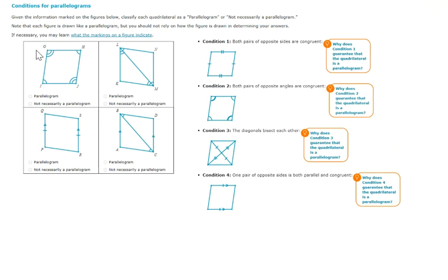Taking a look at the very first figure, I can see that we have marked angle G and J to be equal, and marked angle I and H to also be equal. So it actually meets Condition 2 perfectly. So this one would be a parallelogram.